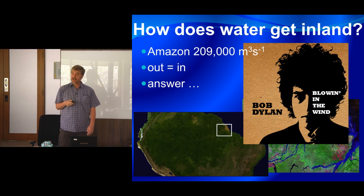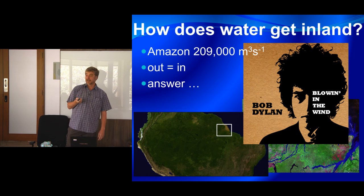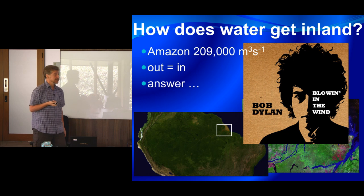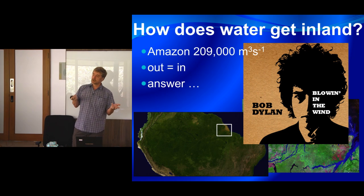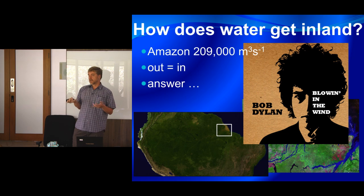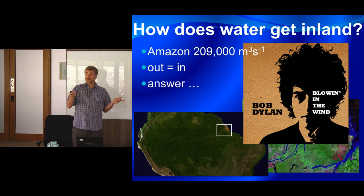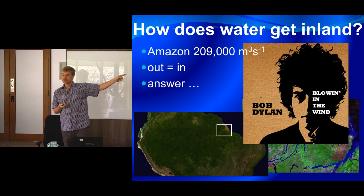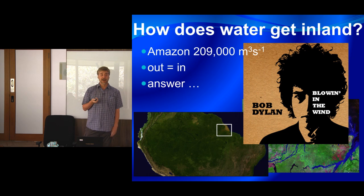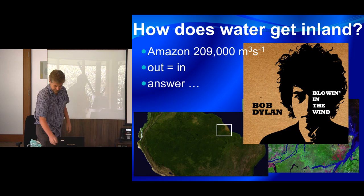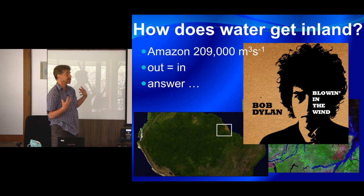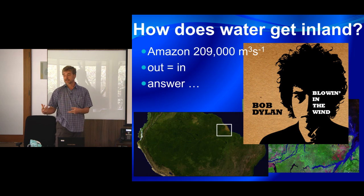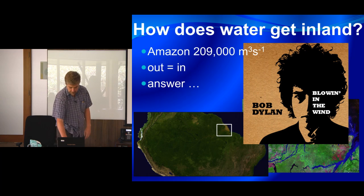So how does the moisture get inland? I read an article in Science about Swedish researchers who like to quote Bob Dylan tracks in scientific papers — and the answer to how moisture gets inland is: blowing in the wind. To actually understand how rain gets inland, we have to understand how wind is carrying all this moisture inland. It's a pretty basic idea, but kind of important to what I'll be talking about.